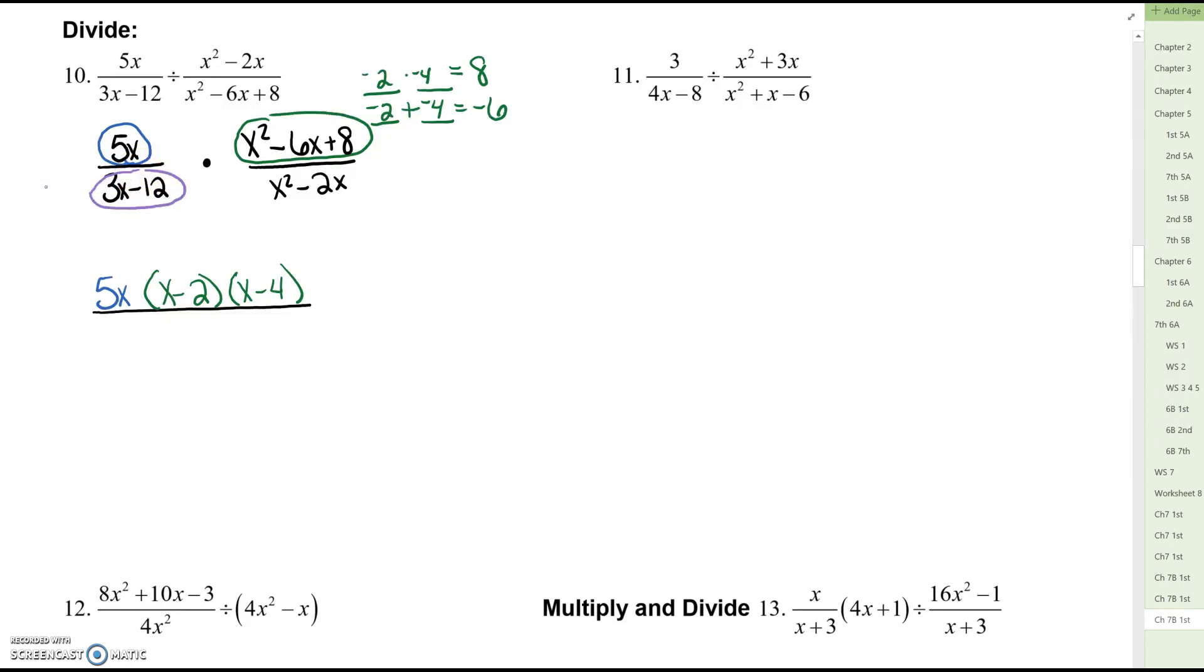3x minus 12. 3x minus 12 is not a trinomial. It is just two terms. And it's not a difference of two squares. So think about what do 3x and 12 have in common. We could divide three out of both of them. And when we divide them both by three we put the leftovers in the parentheses. 3x divided by 3 is x. Negative 12 divided by 3 is negative 4.